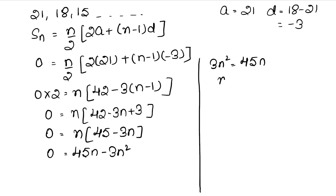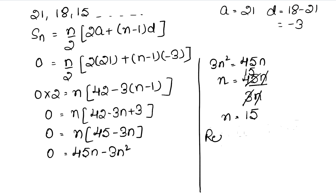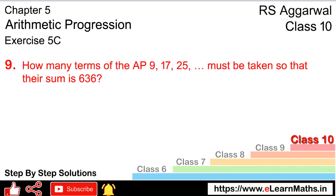अब n की value निकालेंगे। यहाँ पे भी n था, इसलिए एक n नीचे से cancel हो जाएगा। तो n equals to 45n upon 3n — n से n cancel हो जाएगा। 45 divided by 3 = 15। So n = 15। Required number of terms is 15. That is the answer. Let's do question number 9 of exercise 5C, arithmetic progression.